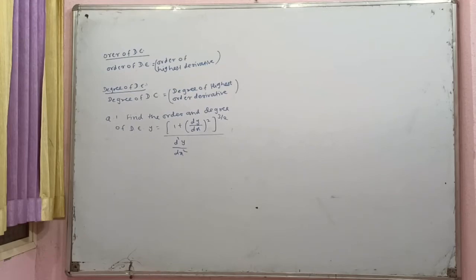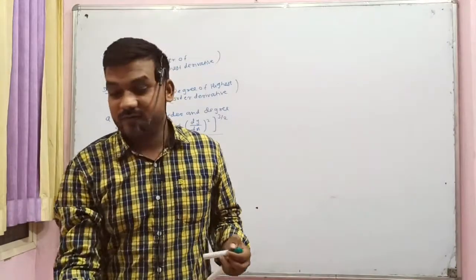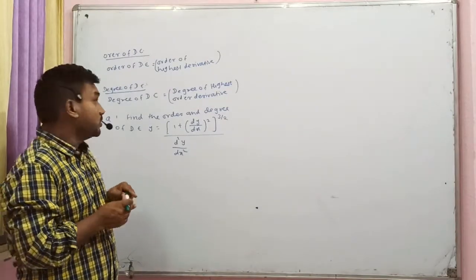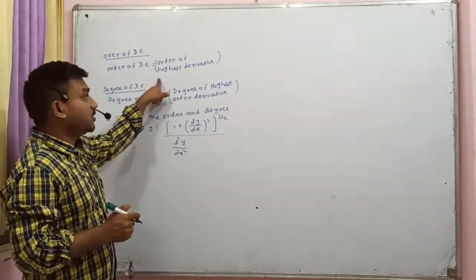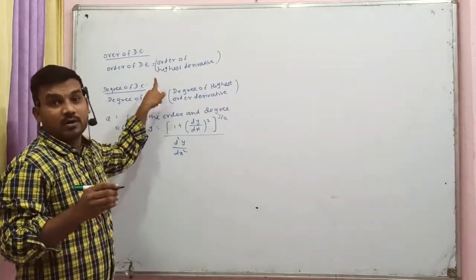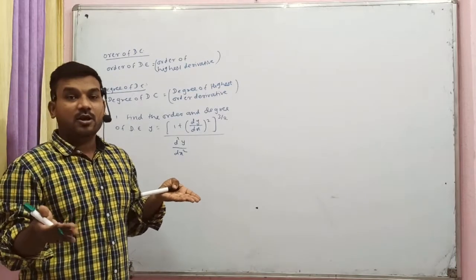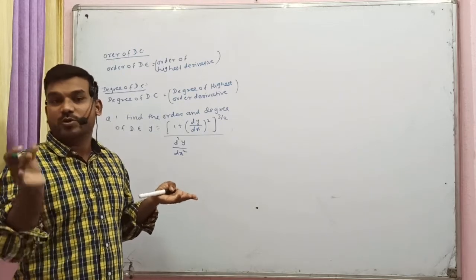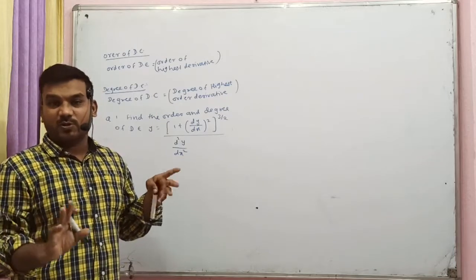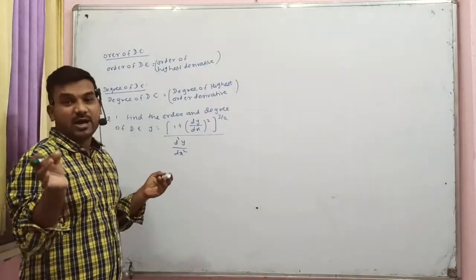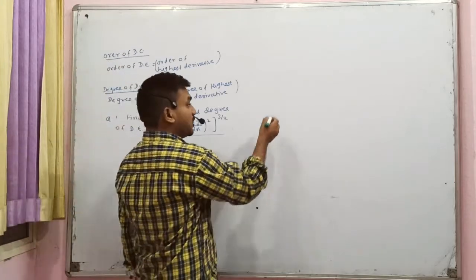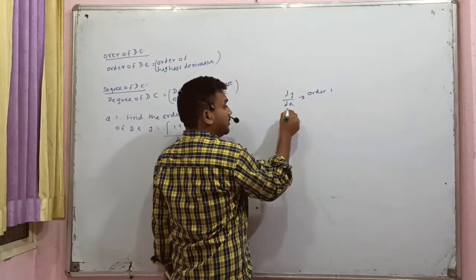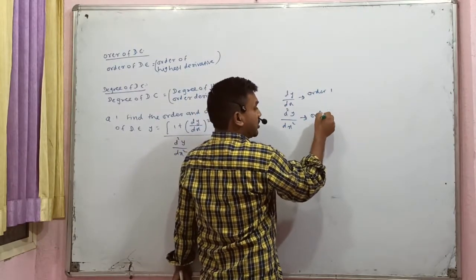Hello, here we start with order and degree of differential equations. This is for degree as well as for diploma 2. The order of a differential equation: first of all, we have to eradicate or eliminate radicals or fractions from the powers. So some square root, cube root, or fraction powers like five by four, three by two — we remove all of those. Then we find the highest derivative in the differential equation. For example, dy/dx is a first order derivative, but d²y/dx² is order two.